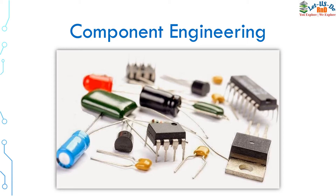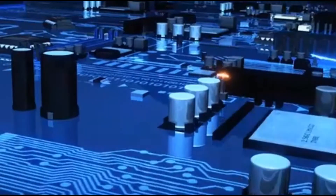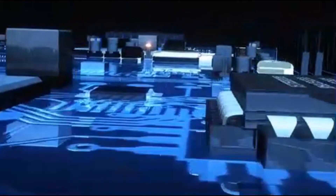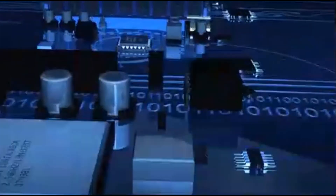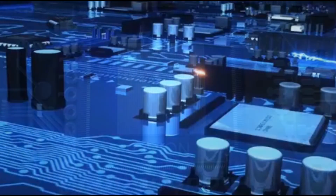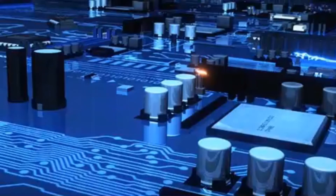Let's explore. Here on the screen you can see different types of components: there is a capacitor, then an IC, different types of capacitors, and an LED. These are all known as electronic components. You can see on a PCB there are lots of components available on a single PCB in order to make it work properly.